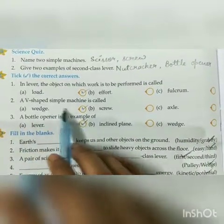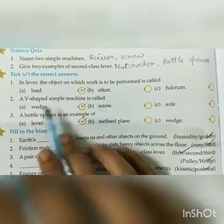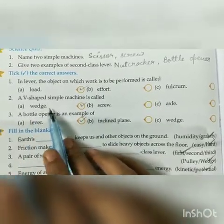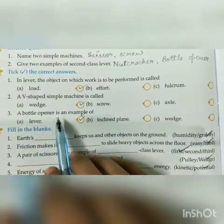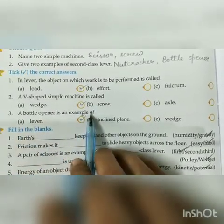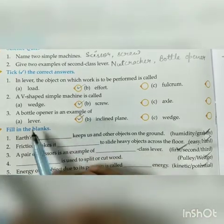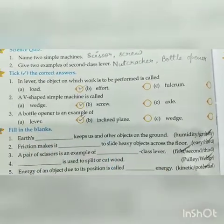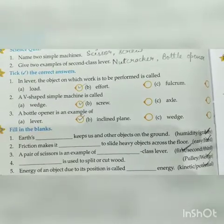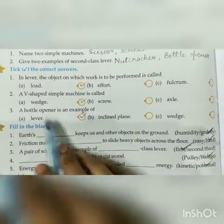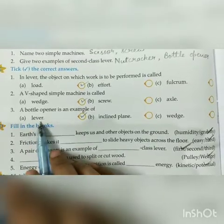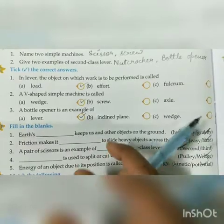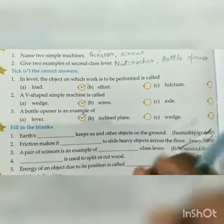Third: a bottle opener is an example of — option A is lever, B is inclined plane, and C is wedge. As we all know, a bottle opener is an example of a lever, because a bottle opener has three parts: load, effort, and fulcrum. Answer is option A, lever.